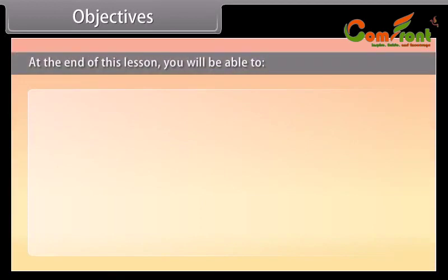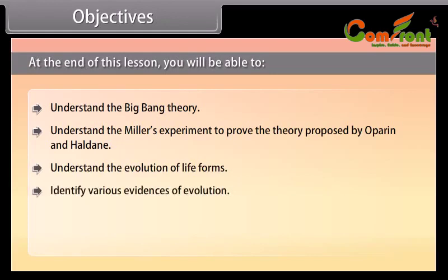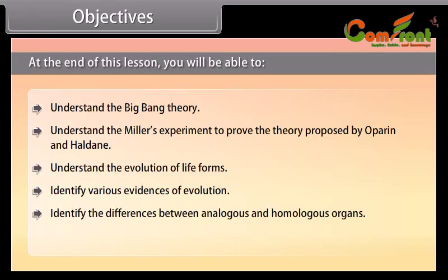Objectives. At the end of this lesson, you'll be able to understand the Big Bang Theory, understand Miller's experiment to prove the theory proposed by Oparin and Haldane, understand the evolution of life forms, identify various evidences of evolution, identify the differences between analogous and homologous organs, and understand the concept of adaptive radiation.